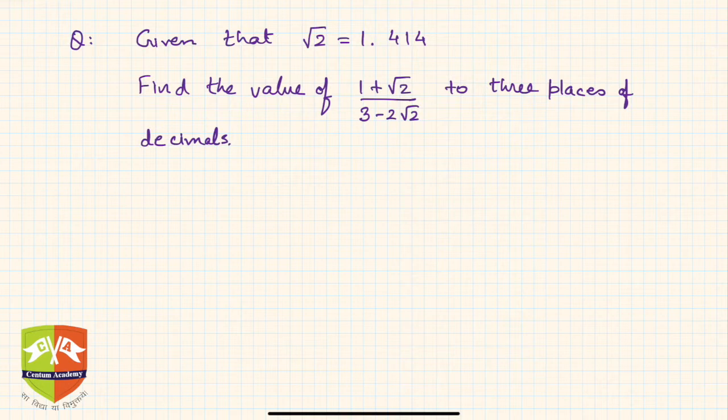Let's see how to use rationalization to solve this problem. So first of all, let's rationalize the given surd: 1 plus root 2 divided by 3 minus 2 root 2. What do we need to do? We need to multiply it with its conjugate.